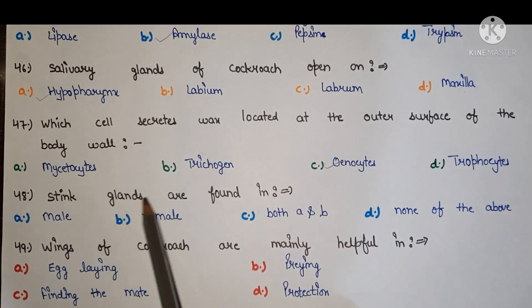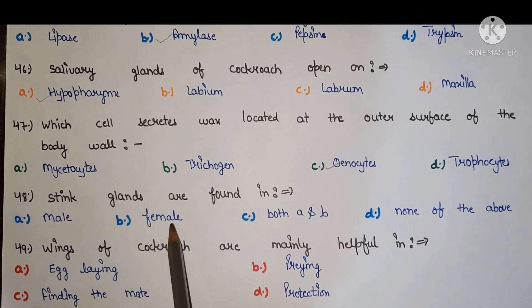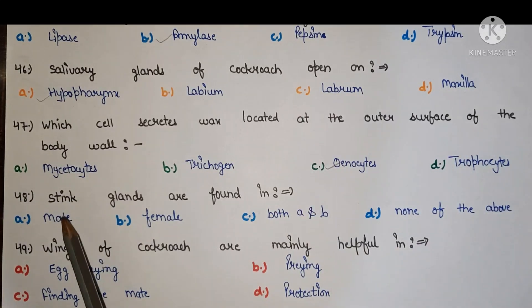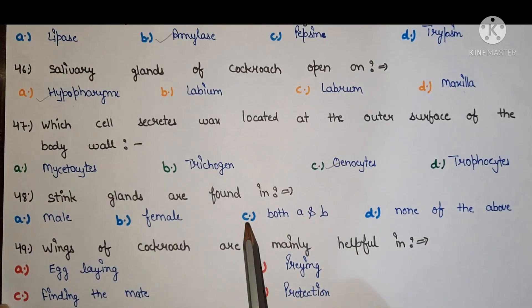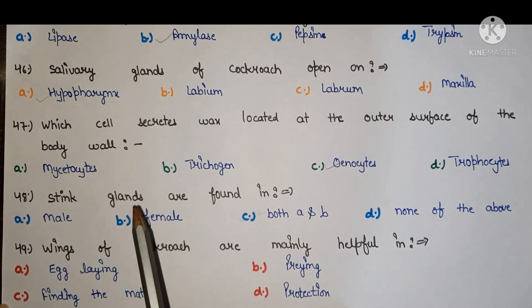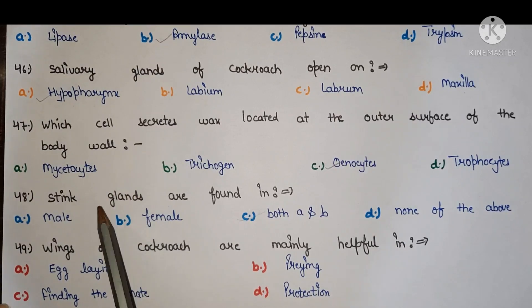Next, sting glands are found in A male cockroach, B female cockroach, C both male and female cockroach, D none of the A and B. The right answer is both male and female cockroach. The sting glands protective mechanism help karte hain. Sting glands secretion jo predators ko cockroach se door rakhta hai, toh jo inka mechanism hota hai protective mechanism perform karte hain.